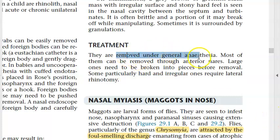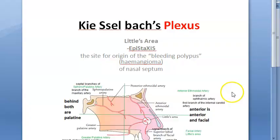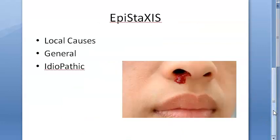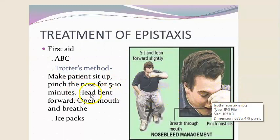Epistaxis can be anterior — due to Kiesselbach's plexus at Little's area — or posterior, due to Woodruff's plexus. Causes: local, general, idiopathic, hypertension. Trotter's method: make the patient sit up and bend forward so blood doesn't go backwards and is not swallowed.